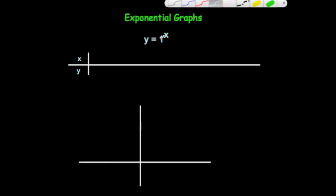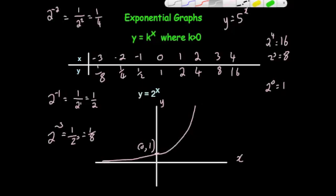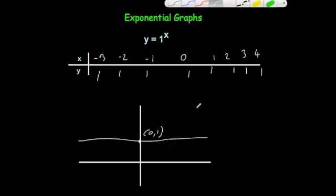Now let's consider y equals 1 to the x. Whenever you have x values of minus 3, minus 2, minus 1, 0, 1, 2, 3, 4 — 1 to the power of anything is 1. So all the answers would be equal to 1. So y equals 1 to the x is just a flat straight line graph that goes through the point (0, 1).